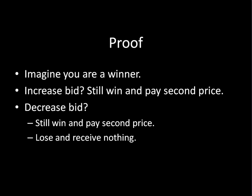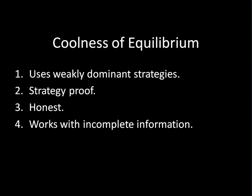You don't have a profitable deviation as a loser, and you don't have one as a winner. This is a Nash equilibrium. What's really cool is that this equilibrium fulfills four properties. First, these strategies are weakly dominant strategies, so this strategy survives iterated elimination of weakly dominated strategies. Second, it's strategy proof. In other games we stress thinking about what the other player is doing and reacting accordingly, but in a second price auction you don't have to think about those things — you just write down how much you value the good and you're done.